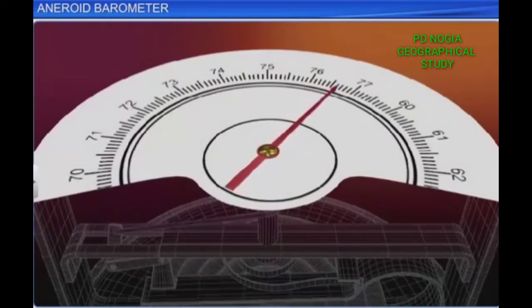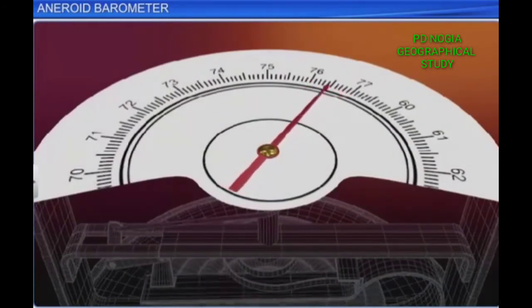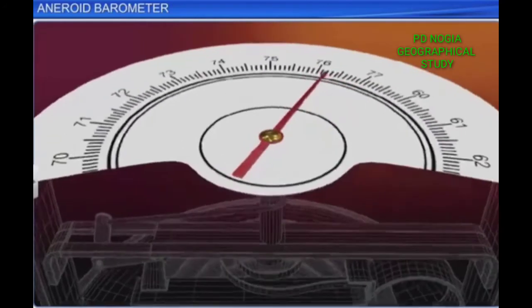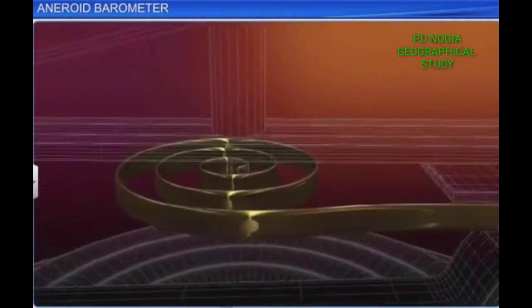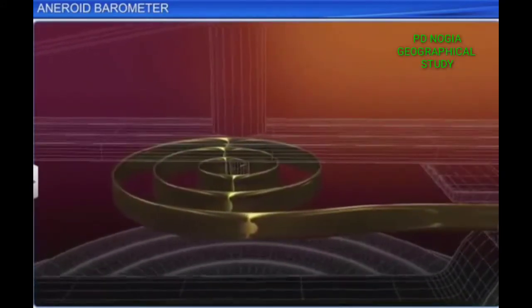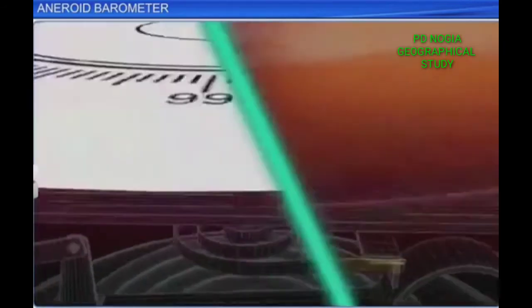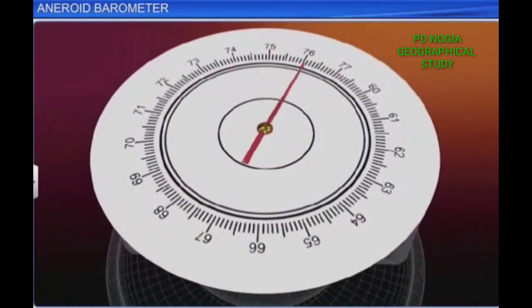The chain and the pulley help transfer the motion of the diaphragm to the pointer on the circular scale. A hair spring is attached to the pulley to bring the pointer back to its normal position. The circular scale is calibrated to note the reading of atmospheric pressure directly.